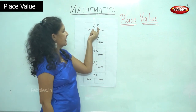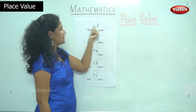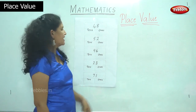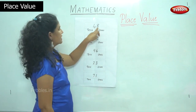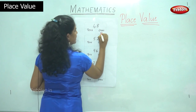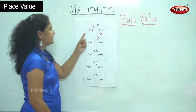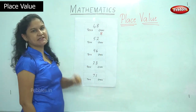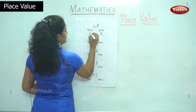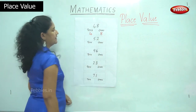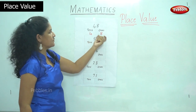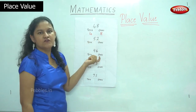When I take 48, what number do I have in the 1s place? I have number 8 in the 1s place, and in the 10s place I have number 4. So I read it as 4 10s and 8 1s, or 48.